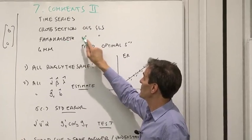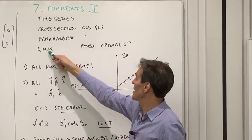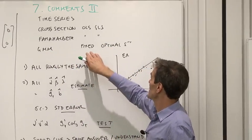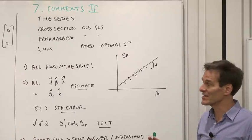The Fama-Macbeth, where you can do OLS or GLS cross-sectional regression, the GMM stochastic discount factor approach, either with a fixed weighting matrix or an optimal weighting matrix. Boy, a lot of things to choose, isn't it?